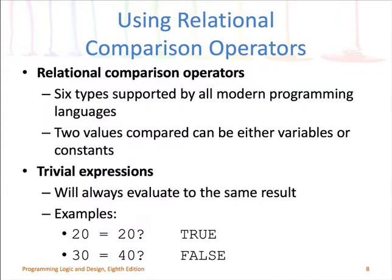We have comparison operators to basically compare values. For example, is one value greater than another? Is it greater than or equal? Or is it equal? Your book talks about something called trivial expressions — questions that if you use constant values, like 'does 20 equal 20,' that's always true. Or 'does 30 equal 40,' that is always false. There's really no reason for trivial expressions because you already know what the answer is going to be.